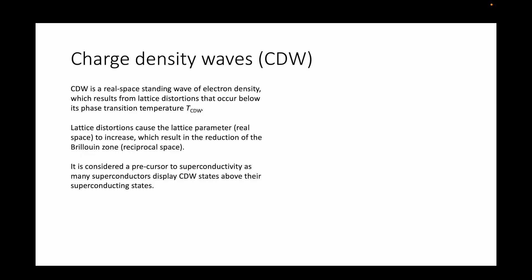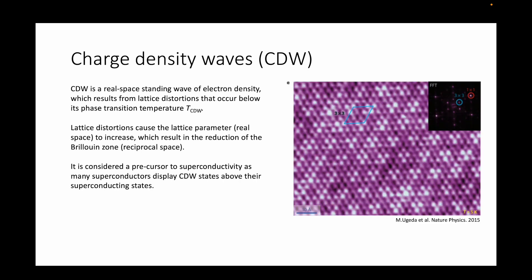Charge density wave or CDW is a phase of matter associated to a standing wave of electron cloud which results from lattice distortions that occur below its phase transition temperature, TCDW. On the right you see a scanning tunneling micrograph of the charge density wave state in niobium diselenide. You can see that there are individual atoms arranged in a hexagonal pattern as well as a large periodicity in the shape of a rhombus. The long range order caused by this lattice distortion results in a reduction of the Brillouin zone and an associated band gap to appear at its Fermi level.